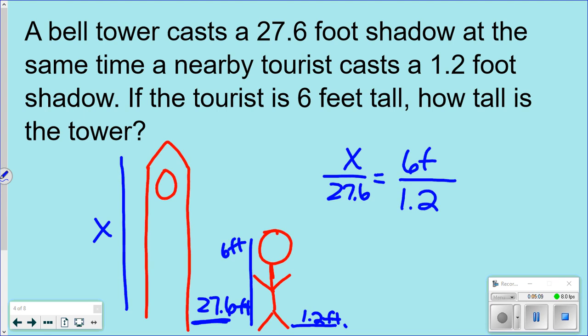I'm going to do my cross products. And take 27.6 times 6 divided by 1.2. And my bell tower is 138 feet tall.